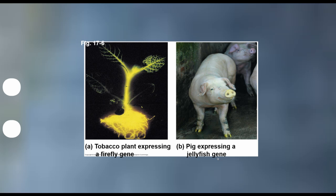Here we have a pig expressing a jellyfish glowing gene. Notice it's only glowing in its hooves and its nose — they inserted this gene next to another gene they were interested in. They're able to look at the pig and know when the gene of interest is being expressed because glowing is also happening in those cells. It sounds a little crazy to make things glow, but it's actually a really important technique for understanding which genes are expressed in certain kinds of cells, and it's an amazing illustration of the fact that our DNA code is truly universal.